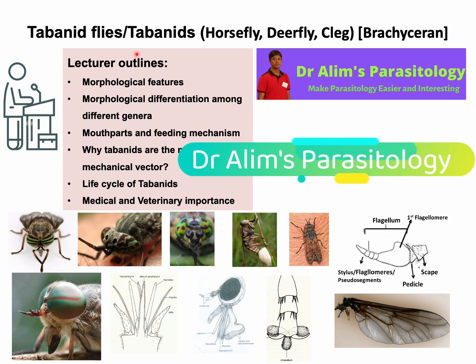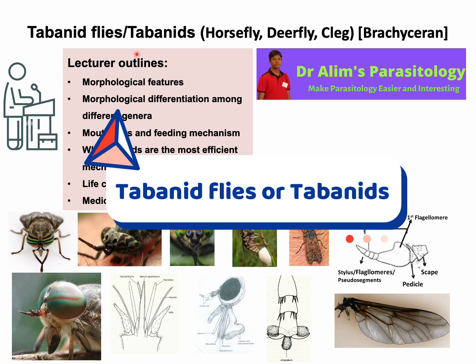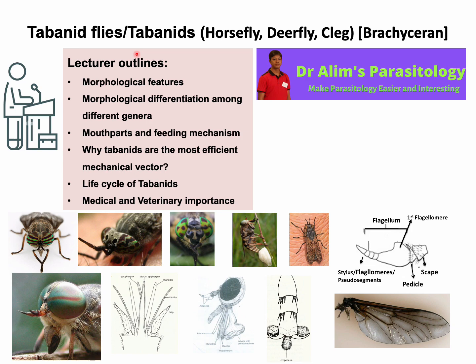Hello dear students and viewers, welcome back to veterinary entomology lectures. In this video lecture I will discuss briefly about the Tabanid fly or Tabanids under the suborder Brachycera. First I will discuss the morphological features of Tabanid flies, then I will summarize the morphological differentiation among different genera. As these flies act as both biological and mechanical vectors, it is important to know their mouth parts and feeding mechanism. Tabanid flies are more efficient mechanical vectors in comparison to other flies, and I will explain the reason.